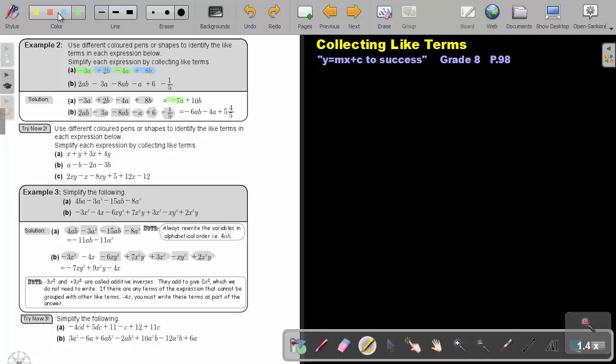Then 8 plus 2, what will that be? That will just be positive 10b. And my final answer will have two terms. I cannot simplify it further because it's unlike terms. Let's look at the next one.